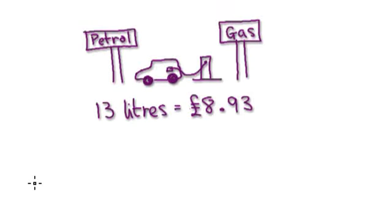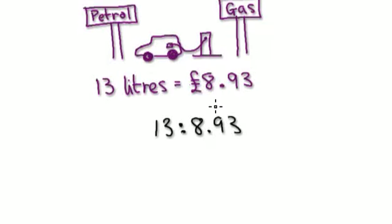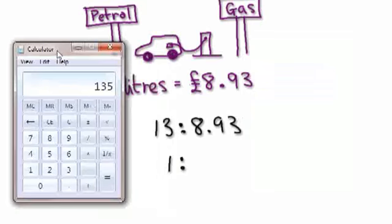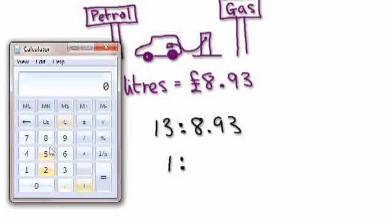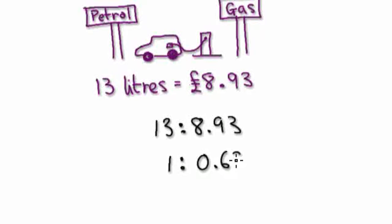OK, so let me summarise the situation. At the moment, it's 13 litres and it costs £8.93. You could reason that one litre would cost £8.93 divided by 13, which equals 0.69.